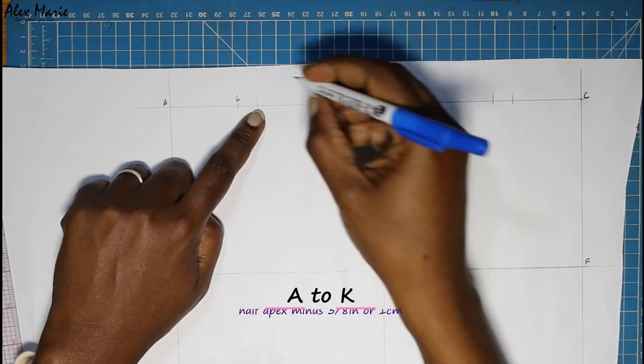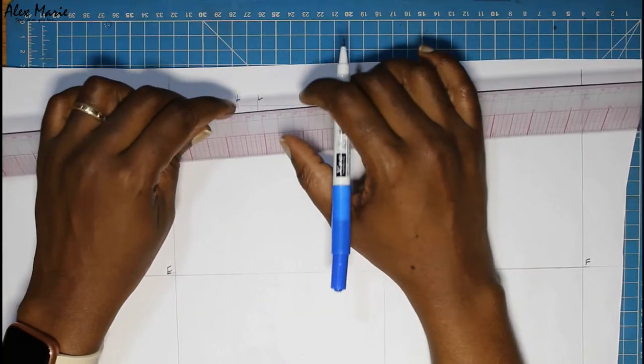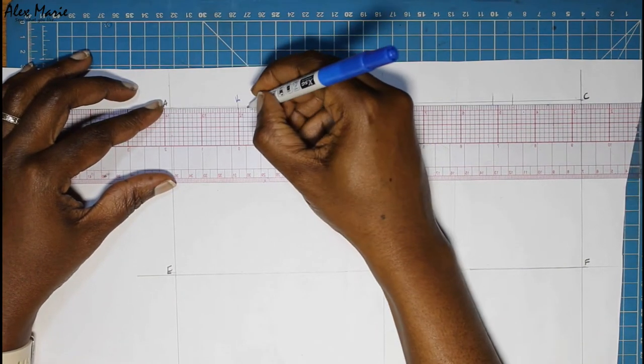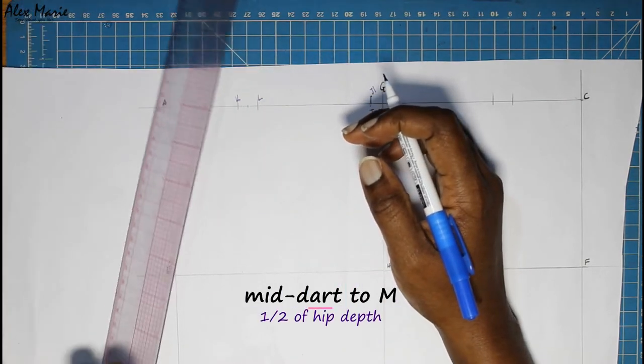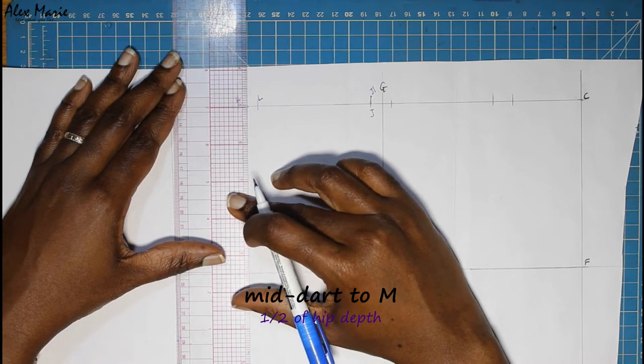So the same thing: A to K is the half apex, K to L is the dart, the first dart. Mark the middle same as before, square down to half hip depth. So we've established the first dart as we did previously.